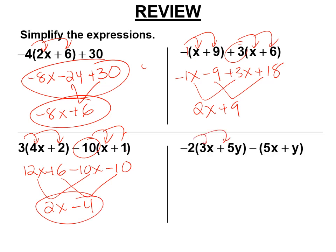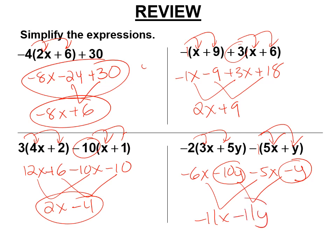Negative 2 times 3x, negative 6x. Negative 2 times 5y, negative 10y. Negative 1 times 5x, negative 5x. Negative 1 times y, negative y. Negative 6x minus 5x, negative 11x, right? Because negative 6x minus 5x is the same as negative 6x plus negative 5x. Negative 10y minus y, negative 10 minus 1, same as negative 10 plus negative 1, negative 11y. This is negative 11x minus 11y.